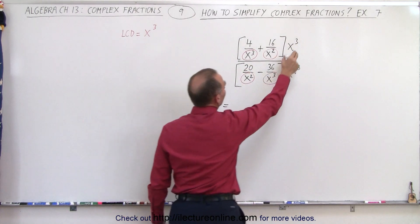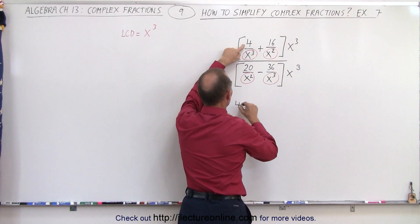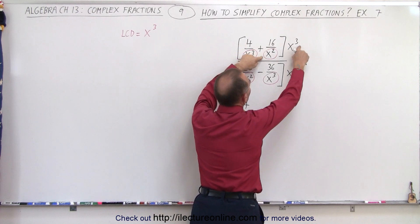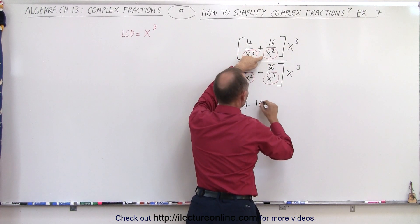Well first of all, when I multiply x cubed times 4 over x cubed, the x cubed cancel out, and I'm left with the 4, plus here, x cubed divided by x squared is x, x times 16 gives me 16x,